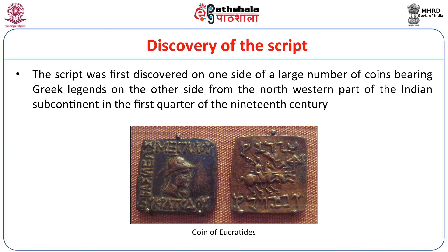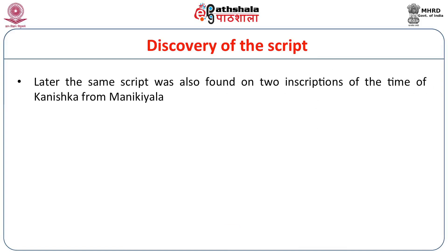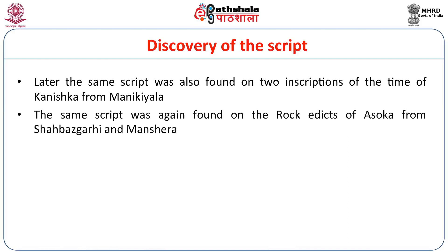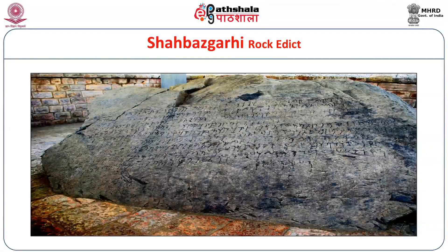These coins were first discovered and people came to learn about the Kharosthi script in the first quarter of the 19th century. Later the same script was also found on two inscriptions of the Kushana ruler Kanishka from Manik Yala in Pakistan. The same script was also found on the rock edicts of Ashoka from Shabazgarhi and Manchera, both situated today in Pakistan. The Shabazgarhi rock edict is a copy of the major rock edicts of Ashoka — a set of 14 rock edicts written in the Kharosthi script.